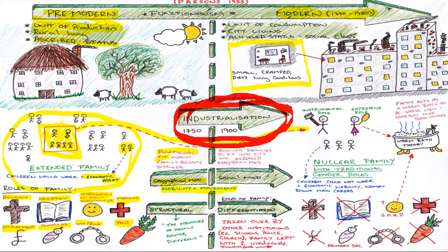When we moved into the city, we changed from units of production to units of consumption. City living was obviously small scale, hence the theory of functional fit and the smaller size of the family. Our status became based on achievement rather than ascription — we achieved our status and social class. In the previous family we had ascribed status, born as a farmer. In the city, we had achieved status; we could work our way up the factory hierarchy and move up and down the social class structure. Working class, middle class, upper class — this division began to occur.